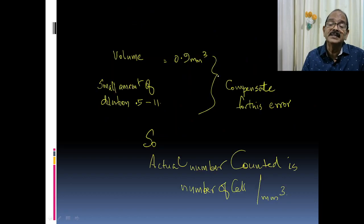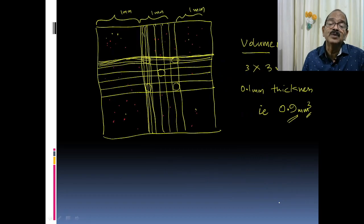When we consider the very minimal dilution—0.5 diluted to 11—you are counting 0.9 mm³ volume with minimal dilution. The actual number of cells you count over the whole area can be taken as the actual count.